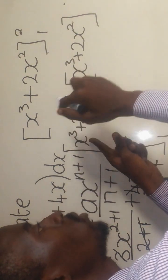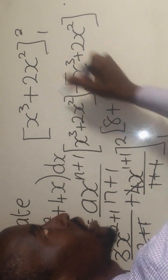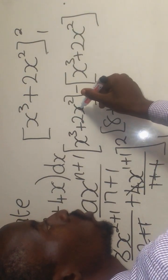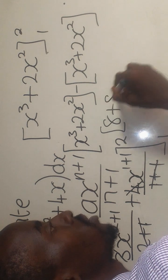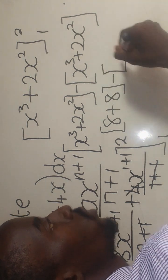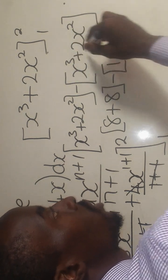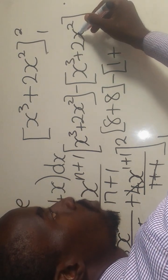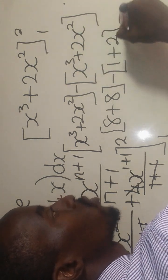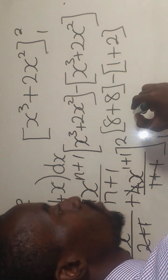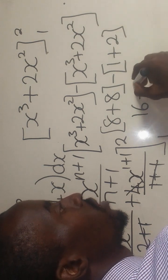Where there is X, if I put 2, it will be 2 times 2 times 2, which gives 8. Plus, where there is X, I put 2, it will be 2 to the power 2, which will be 4. 4 times 2 gives 8. Then for the second equation, if I put 1: 1 to the power 3 gives 1, you say plus, and 1 to the power 2 gives 1. 1 times 2 gives 2. So 8 plus 8 gives 16, minus 1 plus 2, which gives 3.